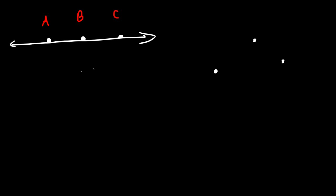What is the difference between collinear points and non-collinear points? Let's call these points A, B, and C. Three points are collinear if they lie on the same line. So these are known as collinear points.